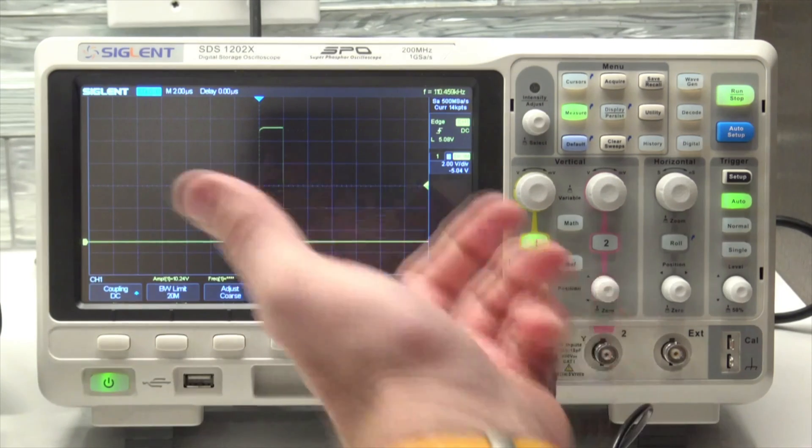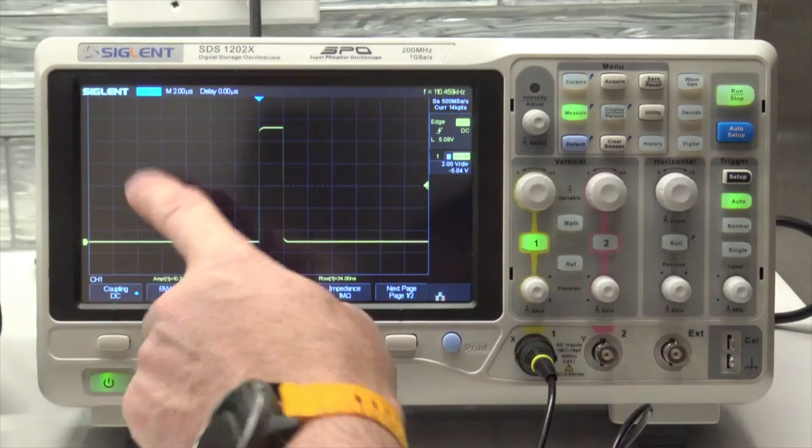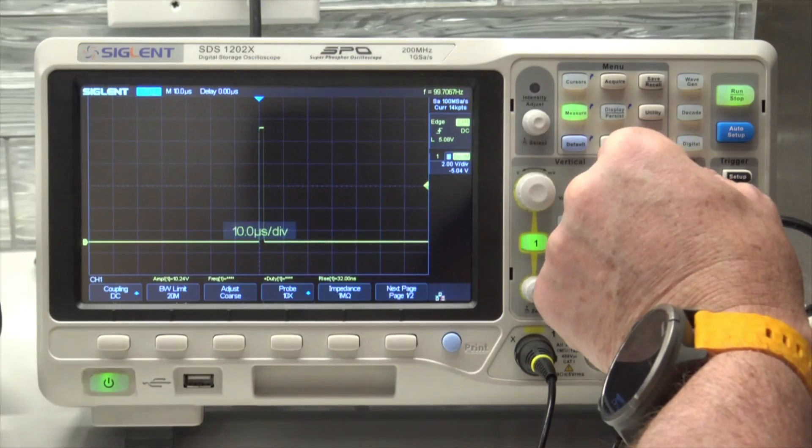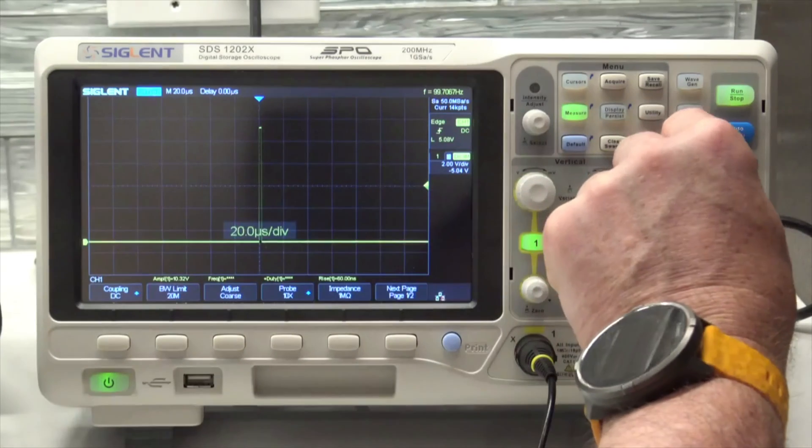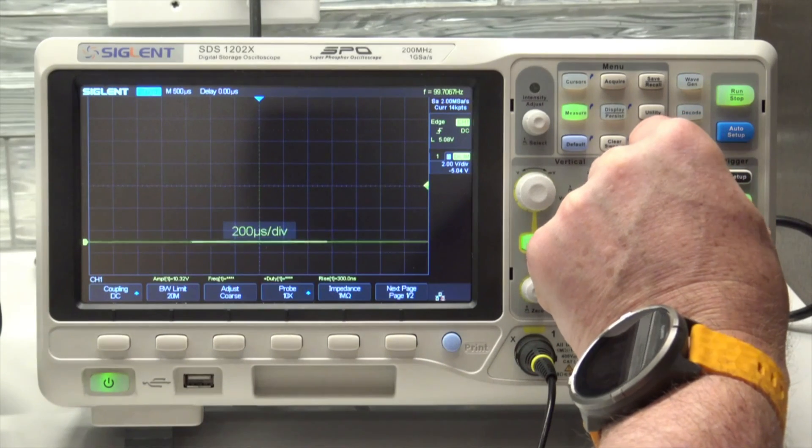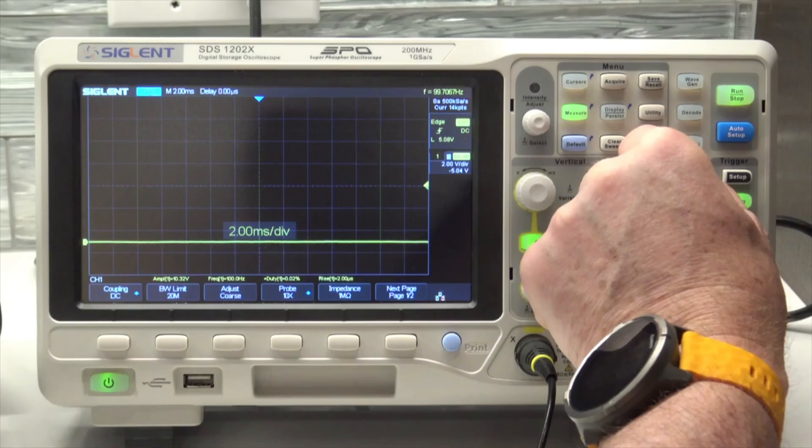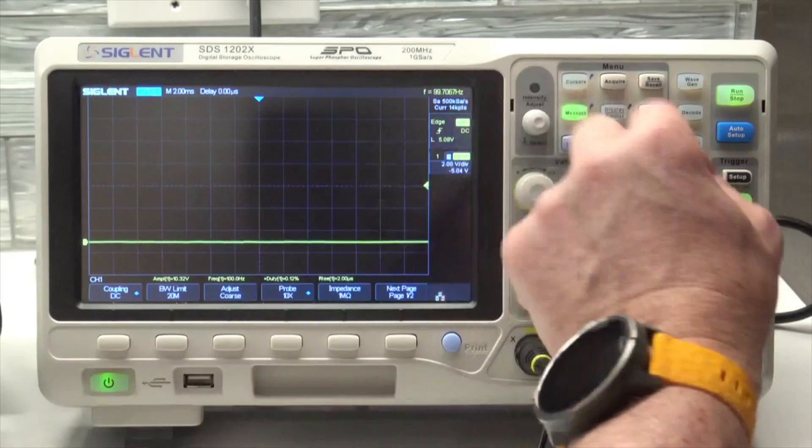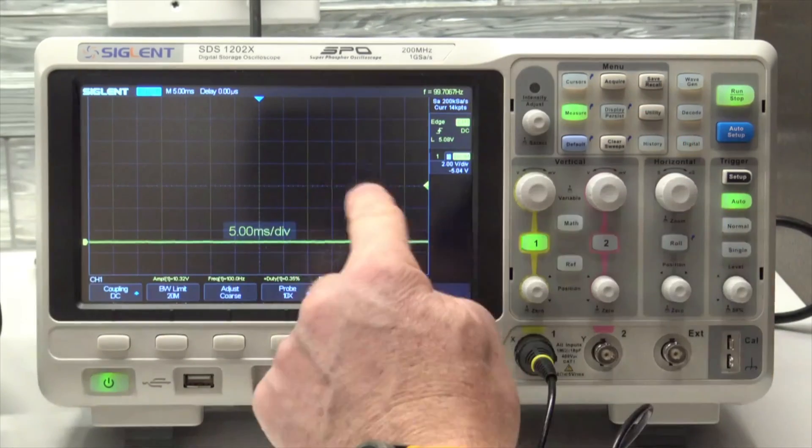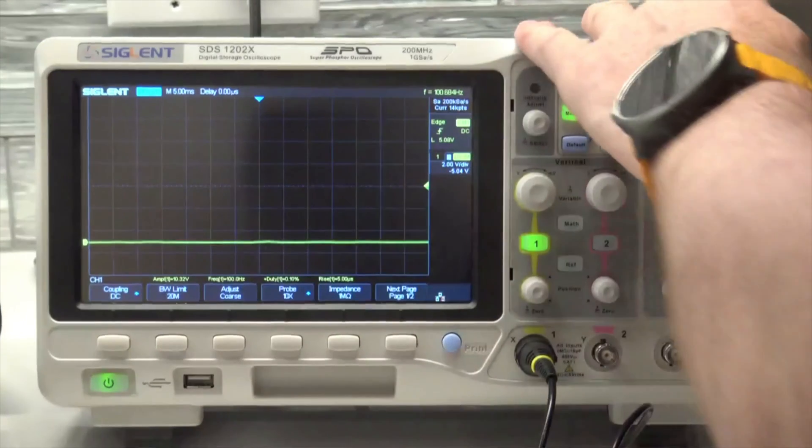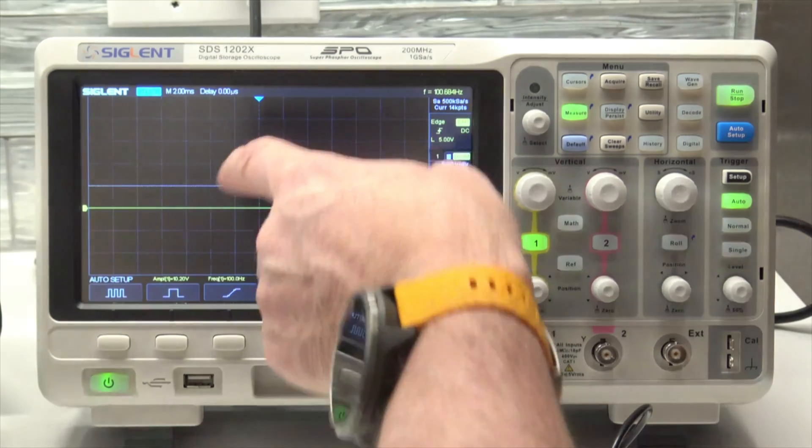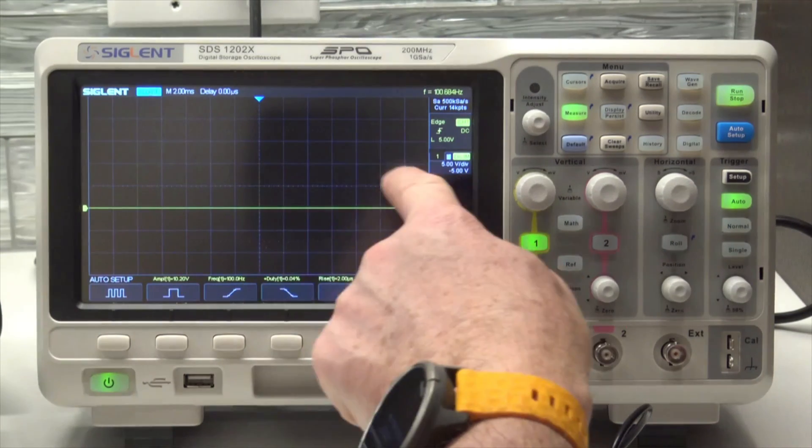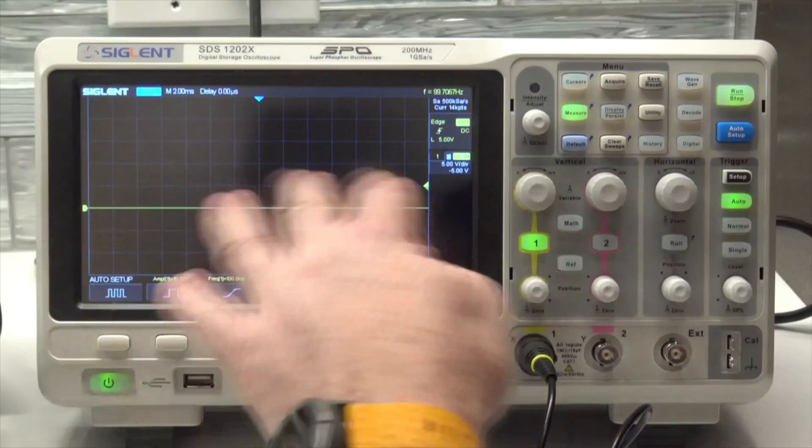Now I'm losing waveforms, I'm losing pulses. Zooming out, I still don't see any other pulses. I think I see some faint pulses here. I'm going to hit auto setup to see what it does for me. I see a faint pulse here, one here, and one here, so about three pulses.